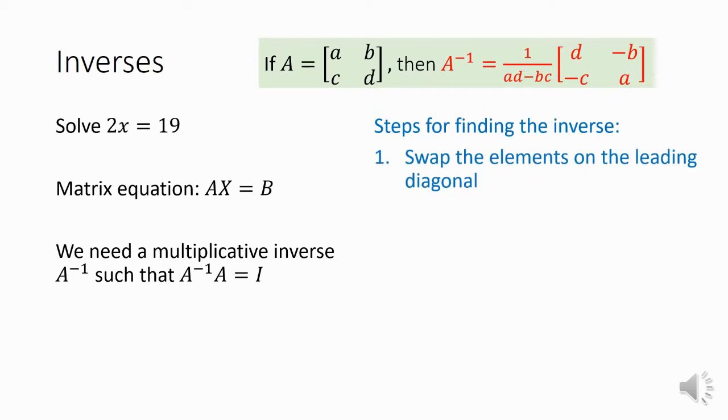You need to grab your matrix and you need to swap the elements on the leading diagonal. That means A and D, they get swapped. We then grab B and C, the other ones we haven't touched, and we multiply those ones by negative 1. So they become negative B and negative C.